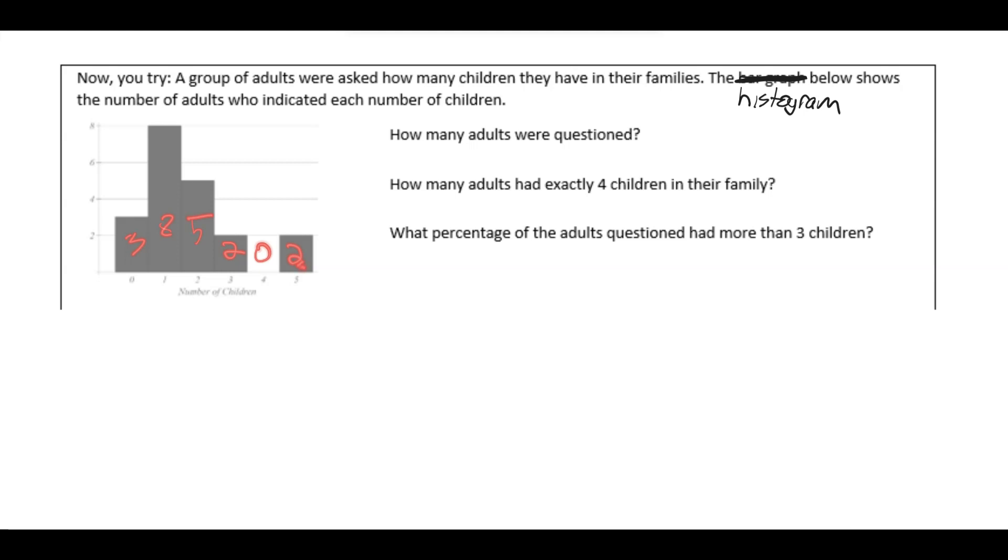If we add those numbers up, we'll know how many total adults were requested to answer this question. So that would be three plus eight plus five plus two. You don't really have to have the plus zero, but you can. Plus two, 20 adults. 20 adults were in the sample for this, probably a survey.